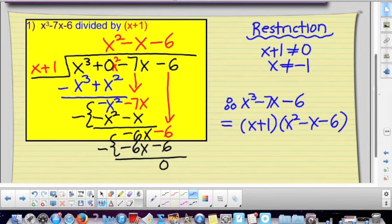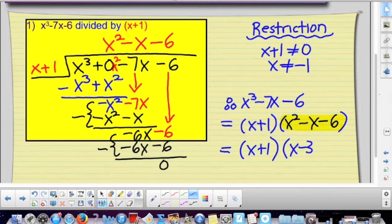Now, I can use long division again to figure out how to break this up, or I can just simply use trial and error. And I know that x squared minus x minus six can be broken down into x minus three and x plus two.